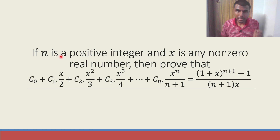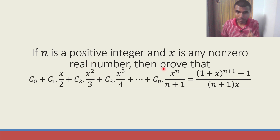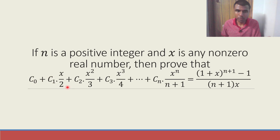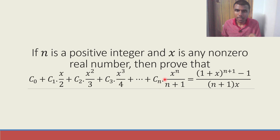Here we are given that if n is a positive integer and x is any non-zero real number, then we have to prove that C0 plus C1 into x by 2 plus C2 into x square by 3, and so on up till Cn into x power n plus 1, is equal to the given expression on the RHS.